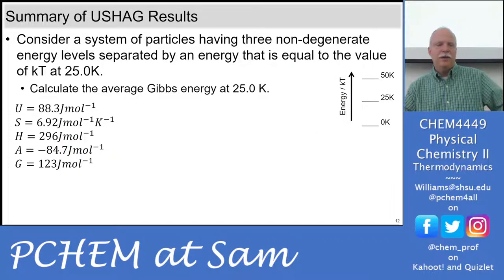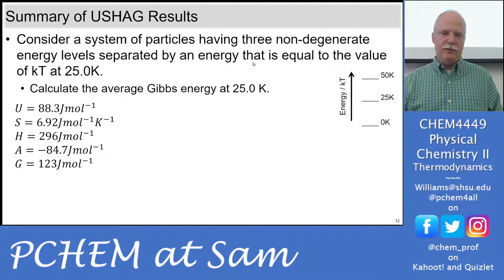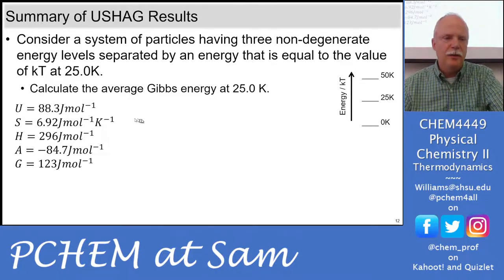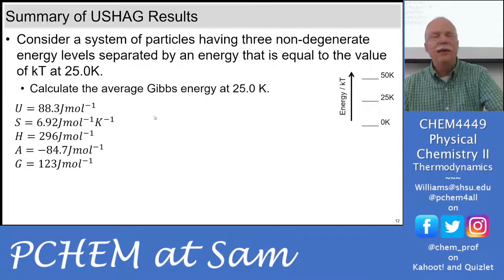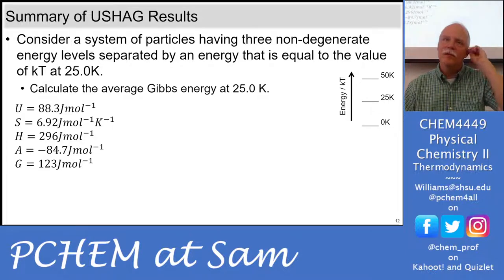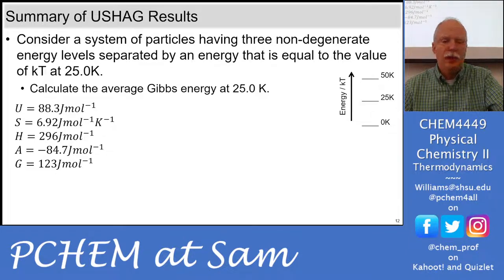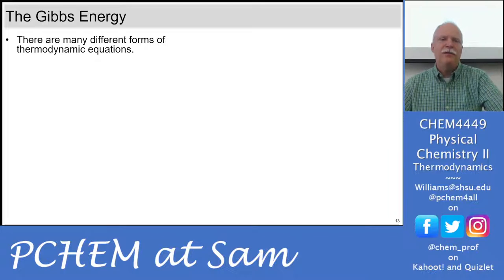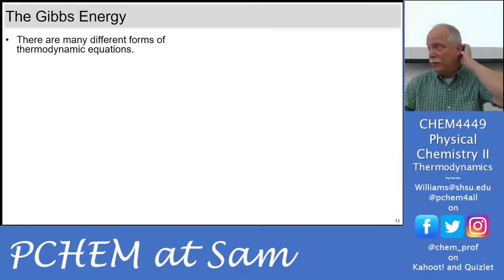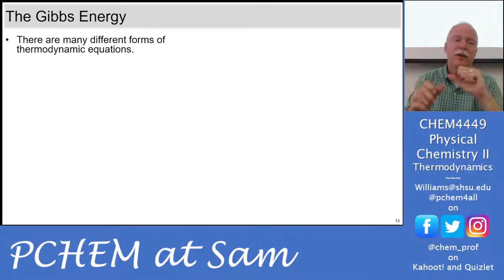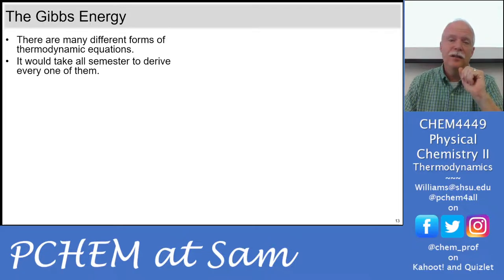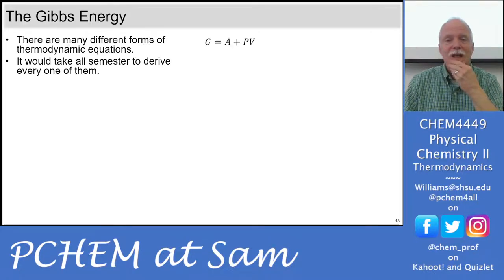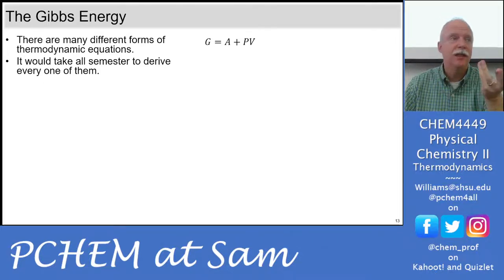Here's our summary of USHAG for our three-level system, where we calculated the average Gibbs energy at 25 Kelvin. These are all our numbers. It really only becomes interesting when you have one system in contact with another system. There are many different forms of thermodynamic equations. You can also calculate the Gibbs energy using the Helmholtz energy — there's a relationship between Gibbs energy and Helmholtz energy.